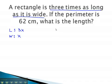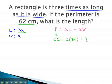From here, we know the formula for perimeter is 2 times the length, plus 2 times the width. The perimeter we are given in the problem is 62 centimeters, is equal to 2 times the length, which we just labeled as 3x, plus 2 times the width, which we just labeled as x.